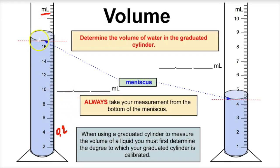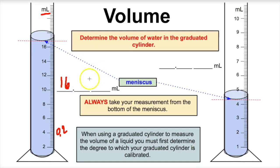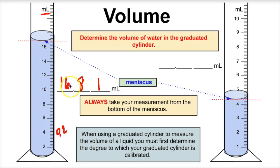If we want to determine what the volume of the water is inside here, we have to get really close and take a careful look. We can see that this is 16.2, 16.4, 16.6, and it looks like 16.8. So we know the water inside this graduated cylinder is 16.8 milliliters. And if we zoom in even closer, we can see that the red dashed line is just a little bit past that mark, so we'll call this 16.81 milliliters. The hundredths place is a little bit uncertain; we had to estimate that. However, the 16 and the 8 are measured with 100% accuracy.